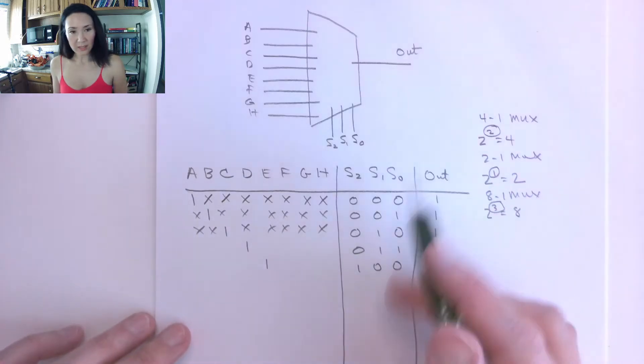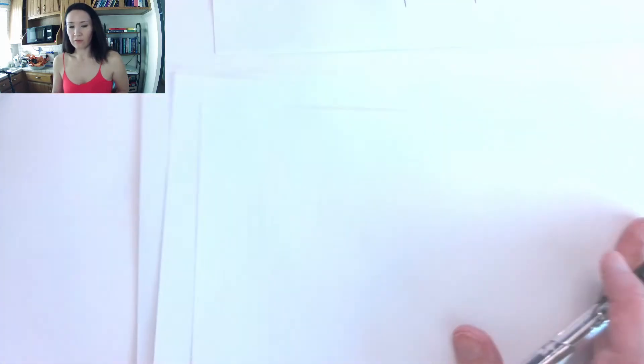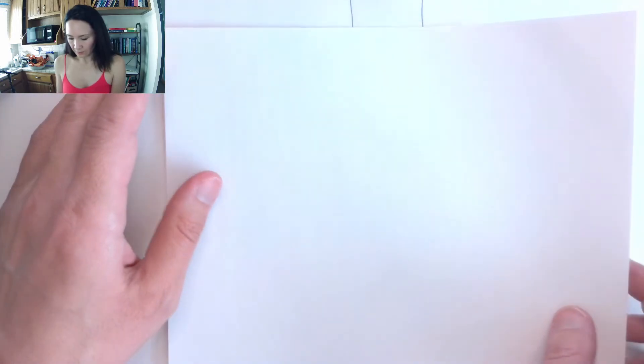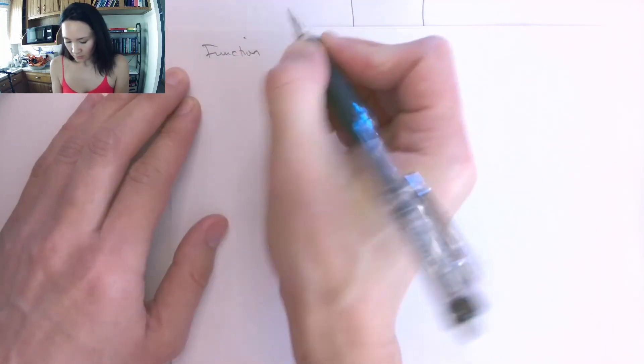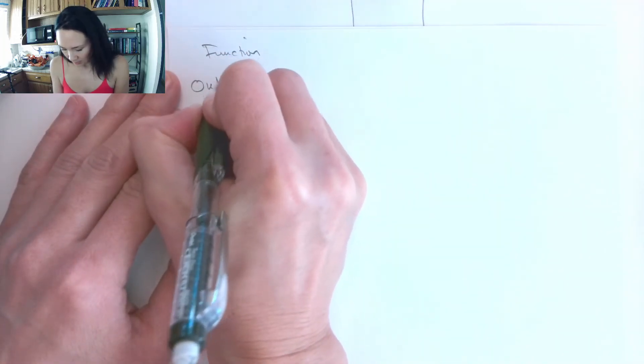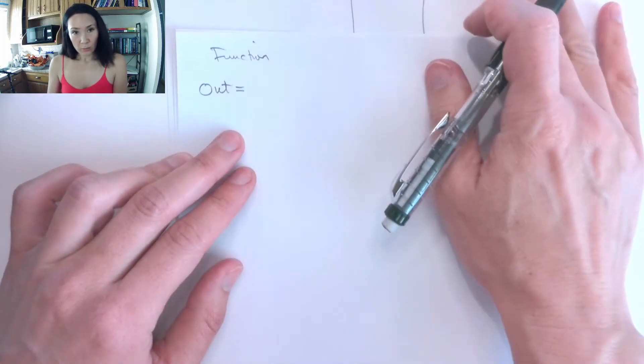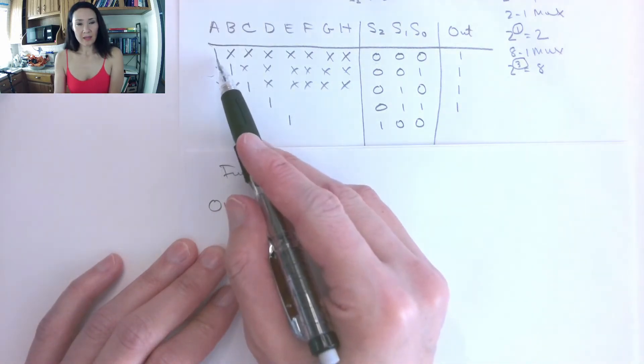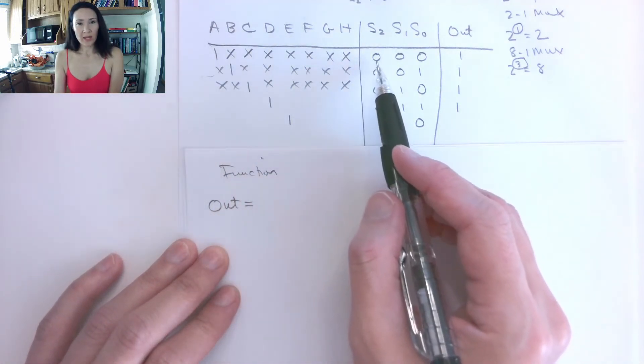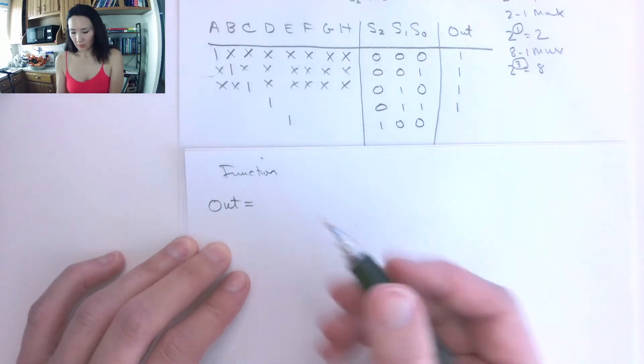Okay, so then if we wanted to write the function for our output, we can do that in sum of products or products of sum form. I will show you how to do the sum of product form. So the function, so this is a logical function that implements the 8-to-1 multiplexer is, well, for this first case, this is going to be A is 1. And then we want to AND it with S2, S1, S0 all being 0s.